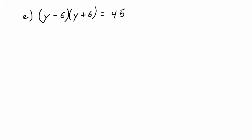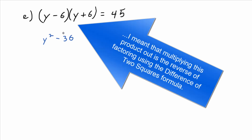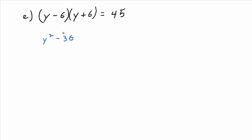So you actually have to multiply out the left side, then bring the 45 over by subtracting it. In order to combine like terms and factor the left side, you need to multiply it out first. What do you get if you multiply out (y minus 6)(y plus 6)? Y squared minus 36. This is the A minus B times A plus B pattern, giving A squared minus B squared. So you have y squared minus 36 equals 45.